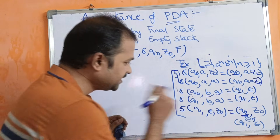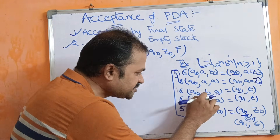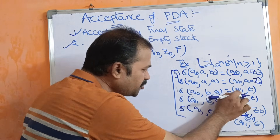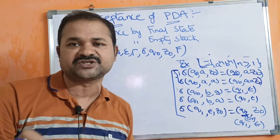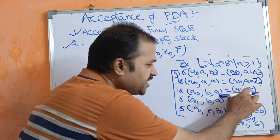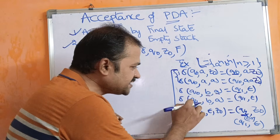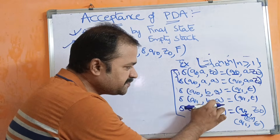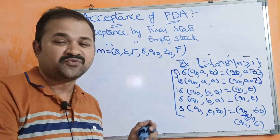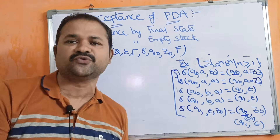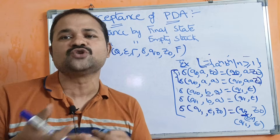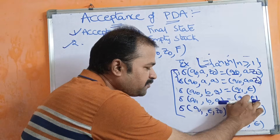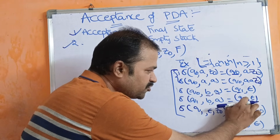The next three are pop operations. If the current state is q₀, the input symbol is b, and the stack's topmost symbol is a, then we change the state from q₀ to q₁ and perform the pop operation. The pop operation is denoted by epsilon. Next, δ(q₁, b, a): if the input symbol is b and the stack's topmost symbol is a, we stay at q₁. For the first b, we change state from q₀ to q₁; for subsequent b's, we remain at q₁. The pop operation is denoted with epsilon.